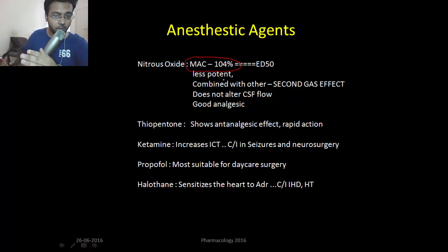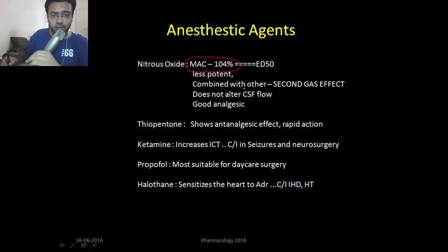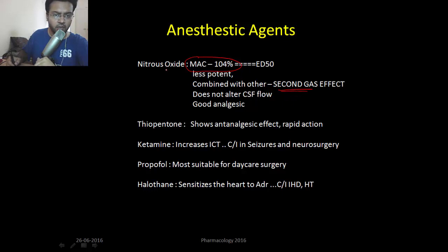Nitrous oxide is less potent because its MAC is extremely high — 104%. So nitrous oxide alone cannot produce an anesthetic effect because you cannot increase concentration greater than 100% in the lungs. It has to be combined with other agents. The other drug combined with nitrous oxide can be used at lower concentration — that's called the second gas effect. Nitrous oxide also does not alter CSF flow and it is a good analgesic.